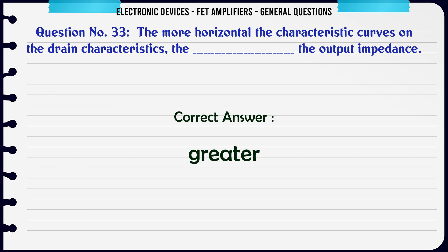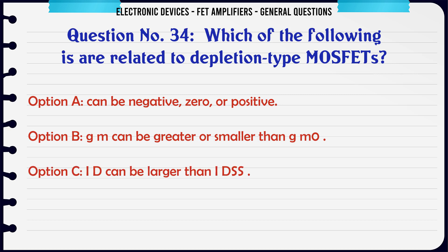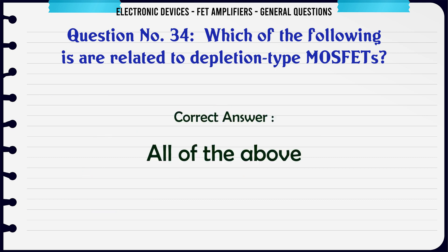Which of the following is/are related to depletion-type MOSFETs? A. VGS can be negative, 0, or positive. B. GM can be greater or smaller than GM0. C. ID can be larger than IDSS. D. All of the above. The correct answer is all of the above.